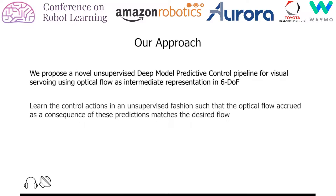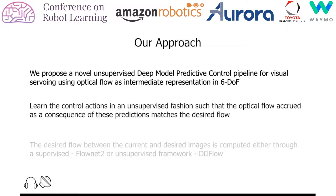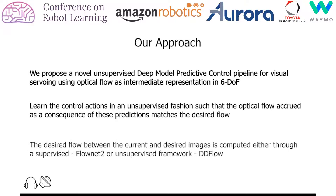We learn the control actions in an unsupervised fashion as the LSTM decoder strives to predict future controls over a time horizon, such that the optical flow occurring as a consequence of these predictions matches the desired flow. The desired flow between the current and desired image is computed either through a supervised network or an unsupervised network.